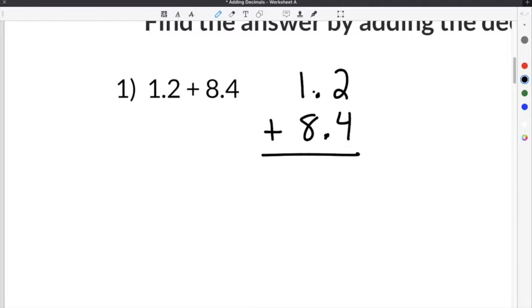Now we have to line the decimals up and we know that our answer is going to have a decimal point in the same spot that the original decimals have once they're lined up.